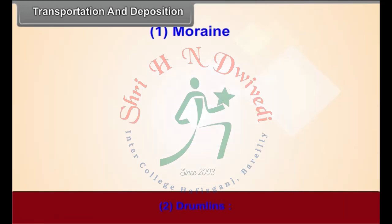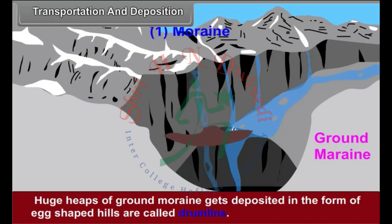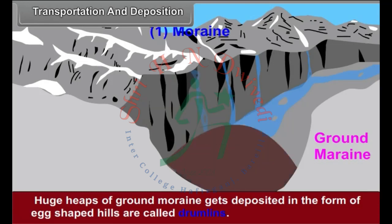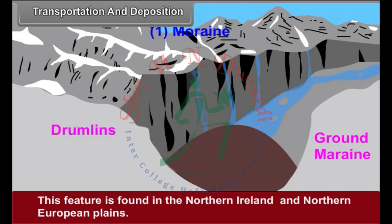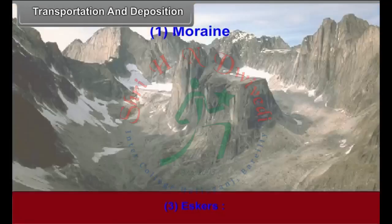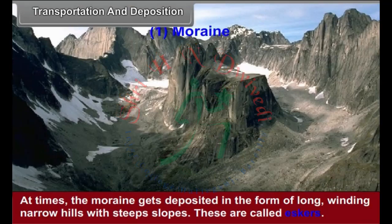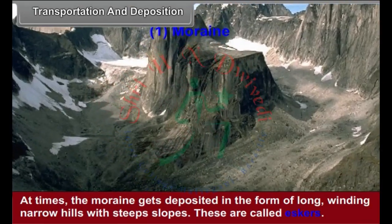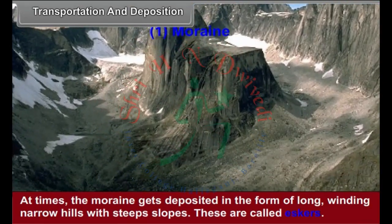Drumlins: Huge heaps of ground moraines deposited in the form of egg-shaped hills are called drumlins. This feature is found in Northern Ireland and the North European plains. Eskers: At times, the moraine gets deposited in the form of long, winding, narrow hills with steep slopes. These are called eskers.